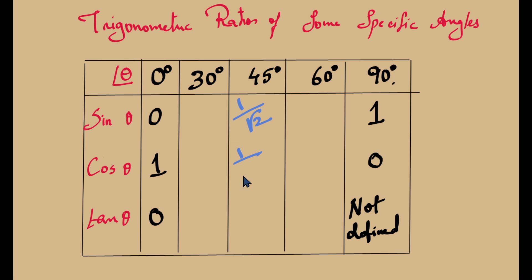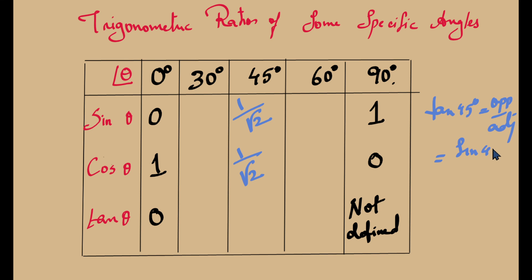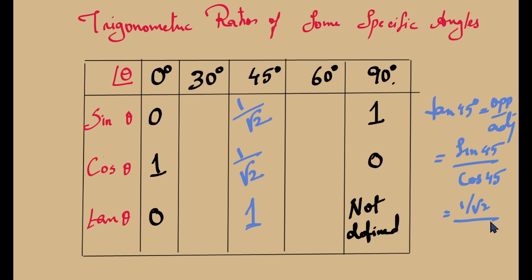We fill in our table: sin 45° equals 1 over root 2 and cos 45° equals 1 over root 2. For tan 45°, it is defined as opposite divided by adjacent, which equals sine 45° divided by cos 45°. Since both are equal, tan 45° equals 1 over root 2 divided by 1 over root 2, which equals 1. I hope this is clear to you, thank you.